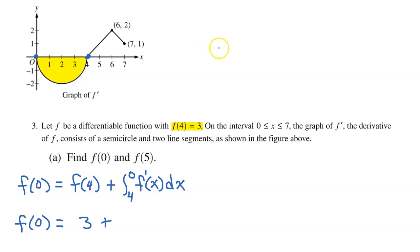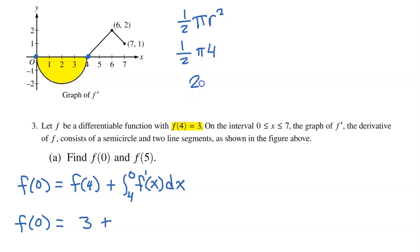This is a semicircle, so the formula for the area of a circle is π r squared, and the area of a semicircle will be one half π r squared. The radius in this case is 2, so that's one half π times 2 squared, which is π times 4, simplifying to 2π. When we integrate from left to right, area below the x-axis is negative and area above is positive. However, we are integrating from 4 to 0 — that's from right to left — so everything is reversed, and area below the x-axis is positive. So this is a positive 2π, meaning f at 0 equals 3 plus 2π.